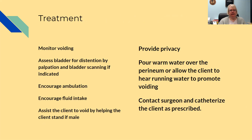Treatment: monitor their voiding and assess the bladder for distension by palpation and bladder scanner. Encourage ambulation and fluid intake. Assist the client to void — help male patients stand, provide privacy, pour warm water over the perineum, and allow the client to hear running water to promote voiding. As a last resort, contact the surgeon and catheterize the client as prescribed — try everything else first.